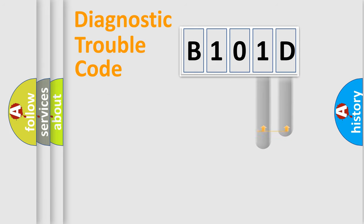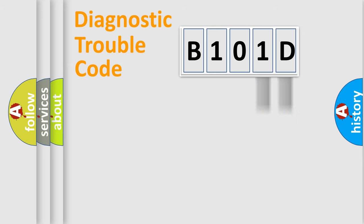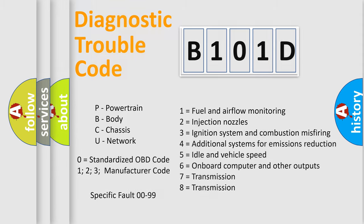Only the last two characters define the specific fault of the group. Let's not forget that such a division is valid only if the second character code is expressed by the number zero.